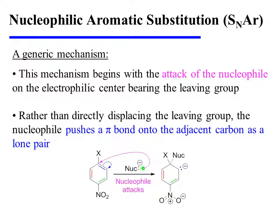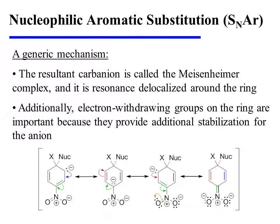This mechanism begins with the attack of the nucleophile on the electrophilic center bearing the leaving group. Rather than directly displacing the leaving group, the nucleophile pushes a pi-bonding pair of electrons onto the adjacent carbon as a lone pair. The resultant carbanion is called the Meisenheimer complex, and it is resonance delocalized around the ring. Those lone pair electrons can be pushed into the adjacent bond to form a new pi-bond, and that pushes the green pi-bonding electrons onto the adjacent atom to place the anionic character at a new ring location.